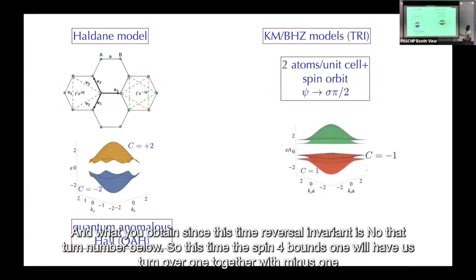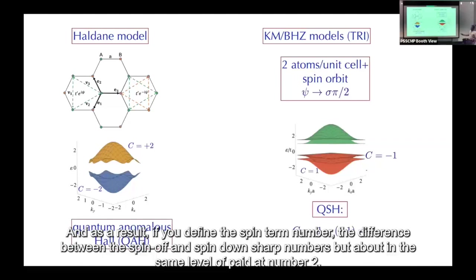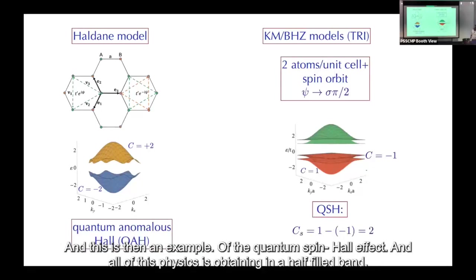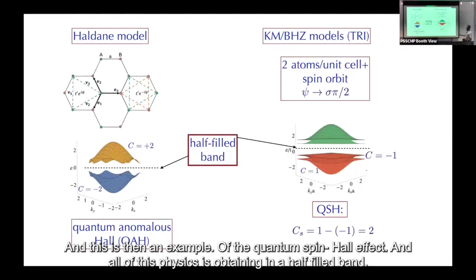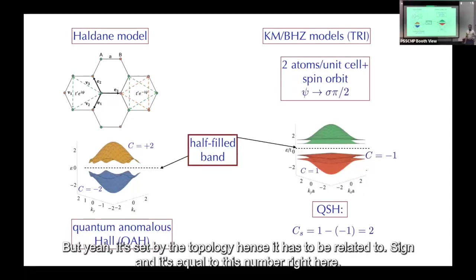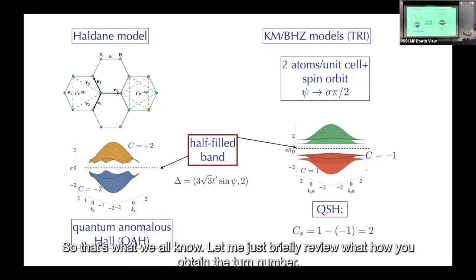As a result the model is time-reversal invariant, with no net Chern number below half filling. The spin-full bands each have Chern number ±1, so the spin Chern number — the difference between spin-up and spin-down Chern numbers — is two. This is the quantum spin Hall effect, occurring at half filling. The gap is set by the topology and is related to this index.